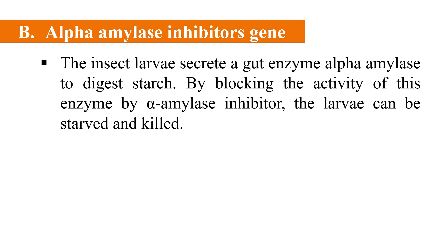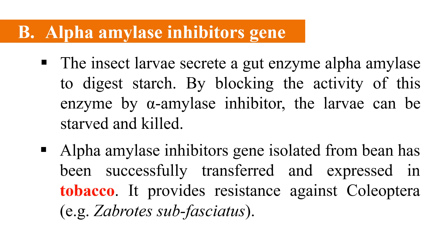The next example of a resistance gene from plants is alpha amylase inhibitor genes. Insect larvae secrete the gut enzyme alpha amylase to digest starch. By using this alpha amylase inhibitor gene, we can make alpha amylase inhibitor; as the insect feeds on that plant, this inhibitor moves into its gut and blocks the activity of the alpha amylase enzyme. As a result, the larva is unable to digest starch, becomes starved, and is ultimately killed. Alpha amylase inhibitor genes isolated from beans have been successfully transferred and expressed in tobacco, providing resistance against Coleoptera — specifically Zabrotis subfasciatus.